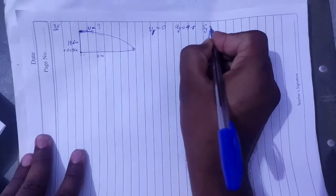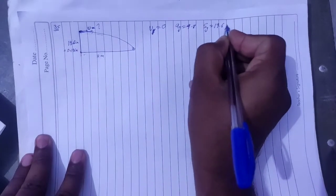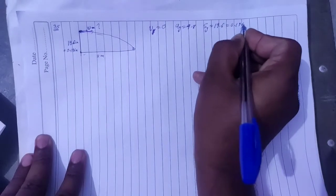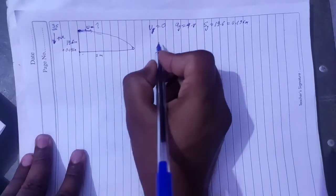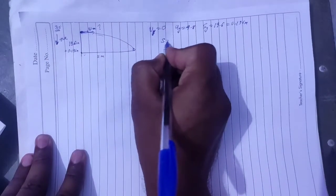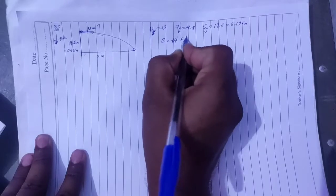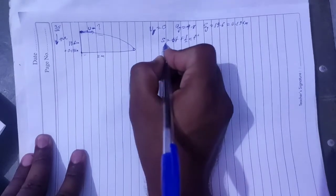Displacement how much? 19.6 cm, 0.196 meter. This I have positive. I mean, I have positive direction. So here time how much? S is equal to ut plus half a t square formula use in y direction.